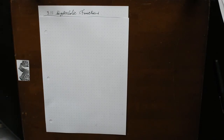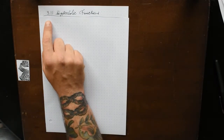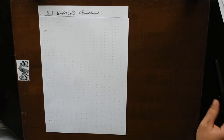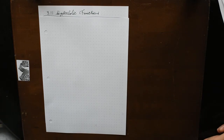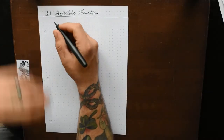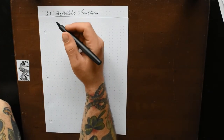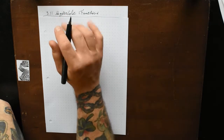Hey everyone, in this video we're going to go over section 3.11, hyperbolic functions. Certain even and odd combinations of the exponential functions e to the x and e to the negative x occur so frequently in mathematics and its applications that they're given special names.